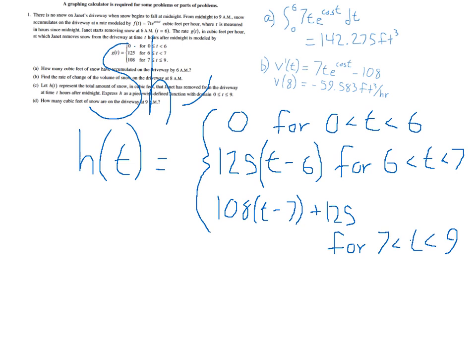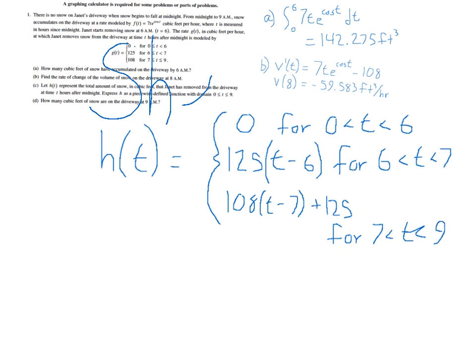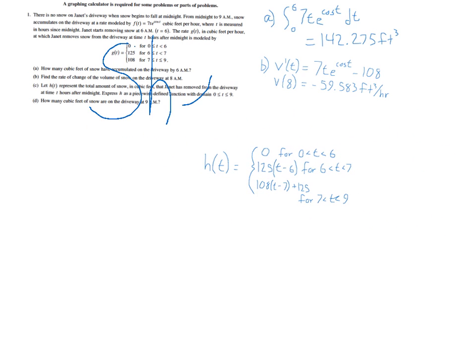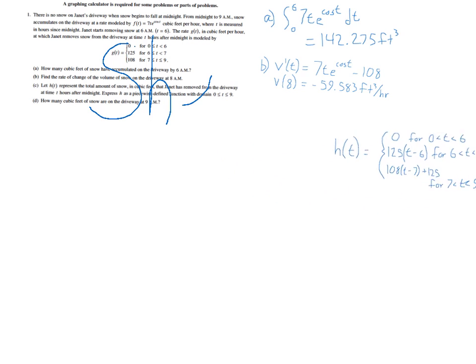So this is how much we have for 7 to 9. So that's part C. It's a little bit trickier than it looks at first glance. But if you just take a second and think about it, I think that makes a lot of sense.